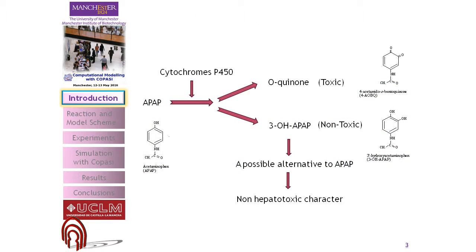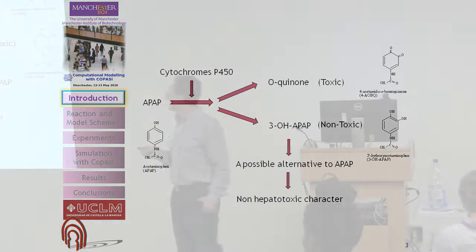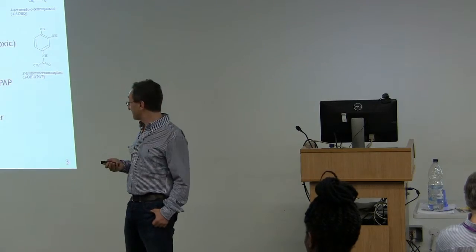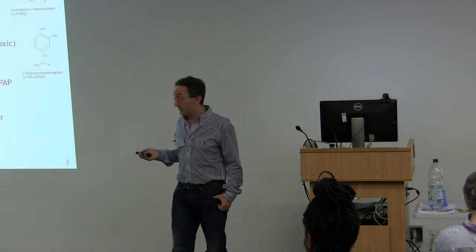This is something we will see in the next two or three slides. Paracetamol is bio-activated by cytochrome P450. Then there are two pathways: one produces the O-quinone and the other produces 3-hydroxyparacetamol. And why is it important? Because it's a possible alternative to paracetamol due to its non-hepatotoxic character.